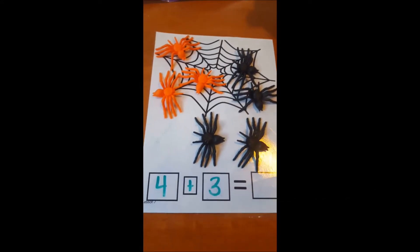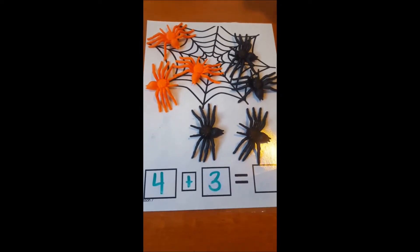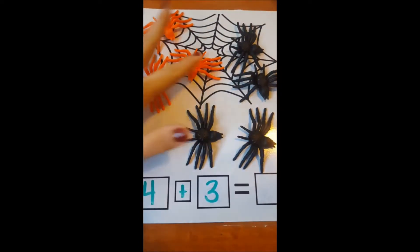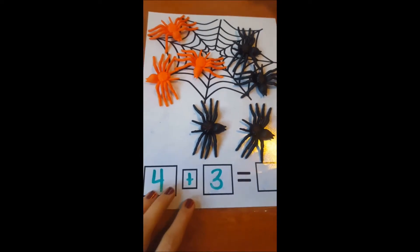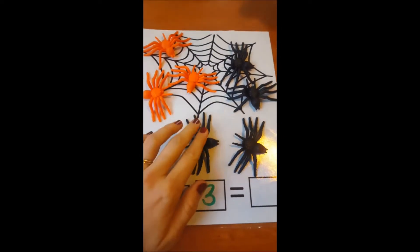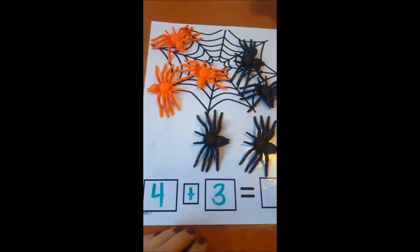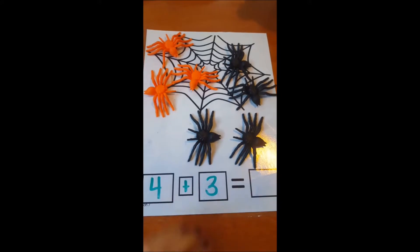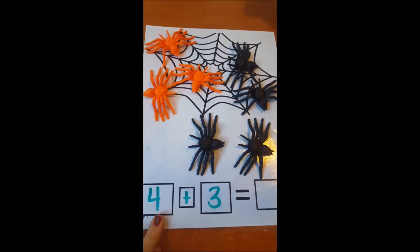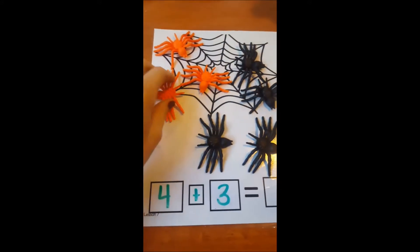We're going to be doing counting on. The reason this is important for students is because we want them to get away from counting all. If they had to add four spiders plus three spiders, instead of saying one, two, three, four, five, six, seven, we want them to start with the larger number. We already know we have four, so let's count three on from there: four, five, six, seven.